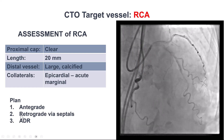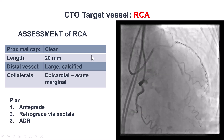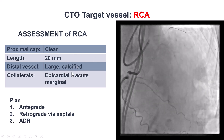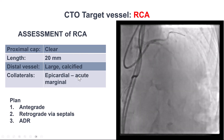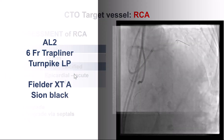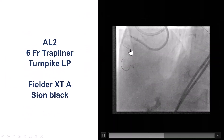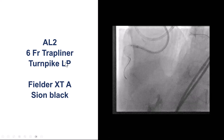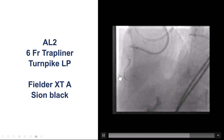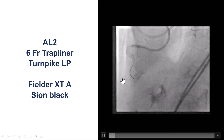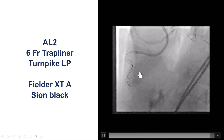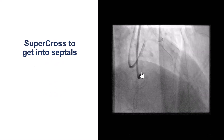The CTO had a clear cap, was relatively short, but had significant calcification, and distally was filling mainly through epicardial collaterals. Using a Turnpike LP with the Fielder XTA and the Confianza Black, multiple attempts were made to cross, but unfortunately the wire could not be advanced past the mid-right coronary artery.